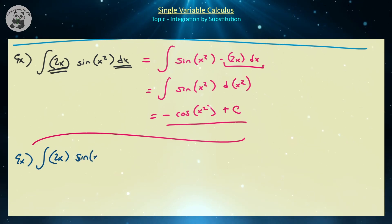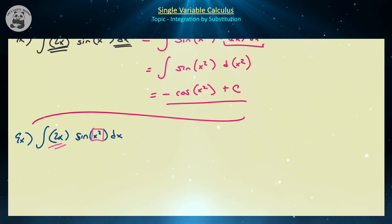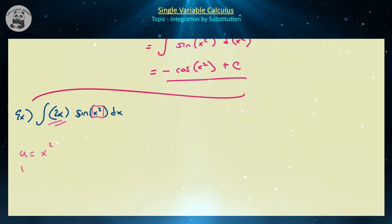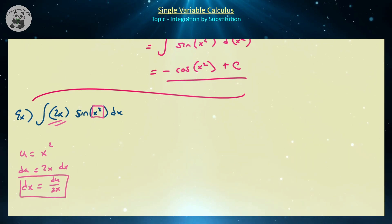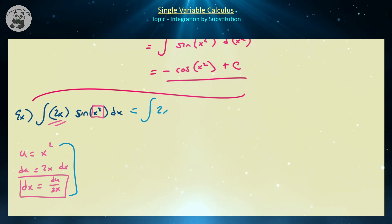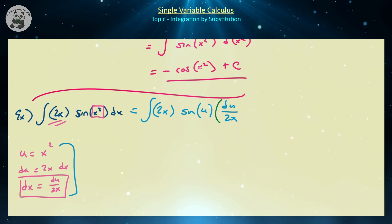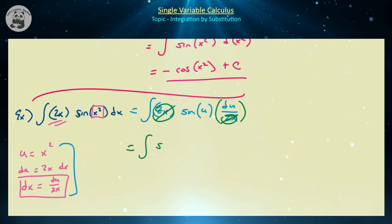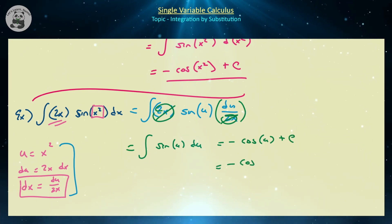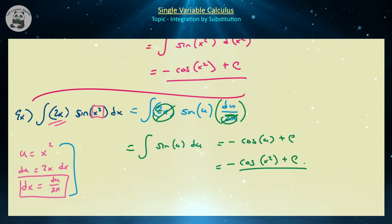Let's walk through the algebraic u-substitution approach for 2x times sine of x² dx. We target x², so let u equal x², and du equals 2x dx, meaning dx equals du divided by 2x. Substituting: 2x times sine of u times du over 2x — the 2x's cancel, leaving the integral of sine of u du, which equals minus cosine of u plus c. Replacing u back: minus cosine of x² plus c.